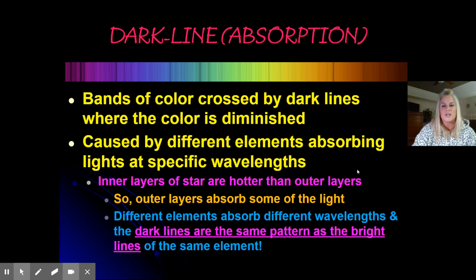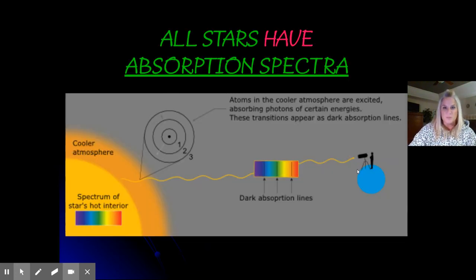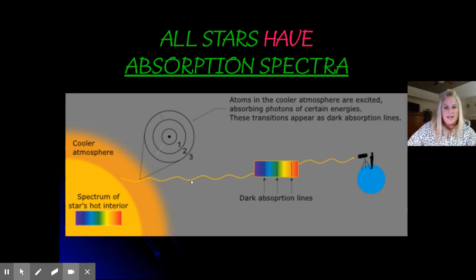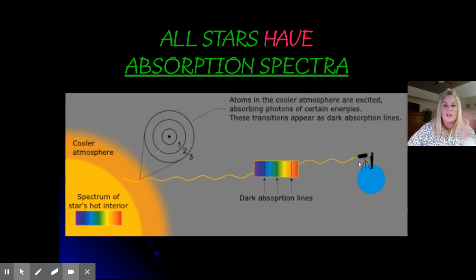This is the most important spectra when studying starlight. All stars have absorption spectra — put that statement in the box in your notes right now. Here's a picture showing how the inside of the star is really hot and the outside is really cool, and the visible light is given off. The atoms in the cooler atmosphere get excited, absorbing photons of energy, and these transitions appear as dark lines. You can see the dark lines appear as it travels through that section, and then on Earth you can compare it to the bright line spectra we've created.